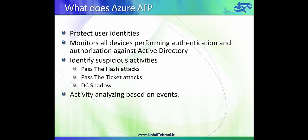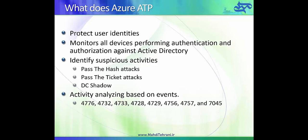Azure ATP will analyze activities based on certain events. If you want to use Azure ATP properly, you need to have auditing enabled in your Active Directory to log certain events. These events can be from a list that Azure ATP will look through in the event viewer of the domain controller — gather, analyze, and parse all the events — and then send them to Azure ATP so we can look closely at what's going on in our environment.